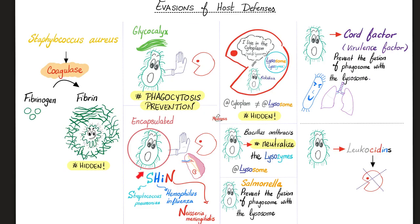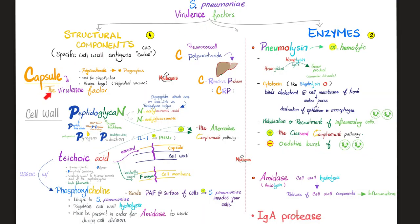Don't forget that Streptococcus pneumoniae is encapsulated, and the capsule is the most important virulence factor. We also have other virulence factors: the peptidoglycan, teichoic acid, and phosphorylcholine.